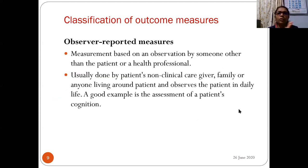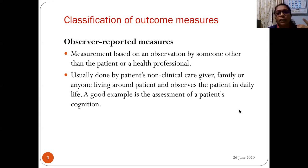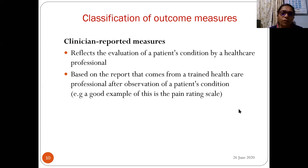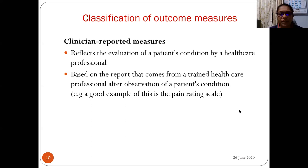The third type is observer-reported measures, where measurement is based on observation by someone other than the patient or a health professional — usually a non-clinical caregiver or family member who observes the patient in daily life. Assessment of cognition level is a good example. The fourth type is clinician-reported measures, which reflect the evaluation of a patient's condition by a healthcare professional based on observation — pain rating scale is a good example.